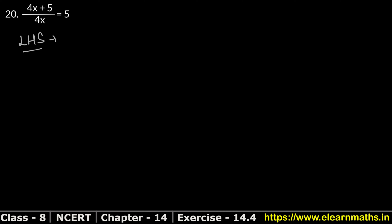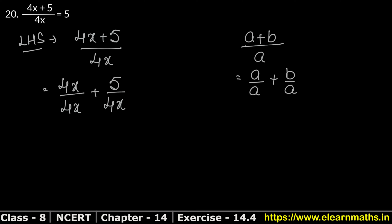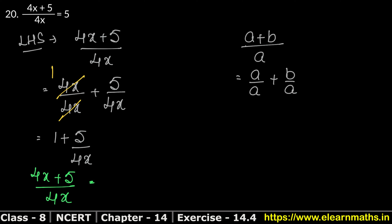Let's do question number 20. Is 4x plus 5 upon 4x equal to 5 or not? Left hand side is 4x plus 5 upon 4x. We can write this as a plus b upon a, which splits into a upon a plus b upon a — that is, 4x upon 4x plus 5 upon 4x. This is our answer.